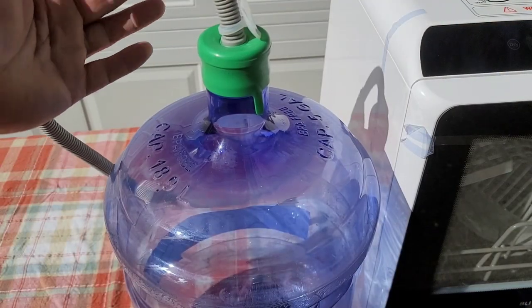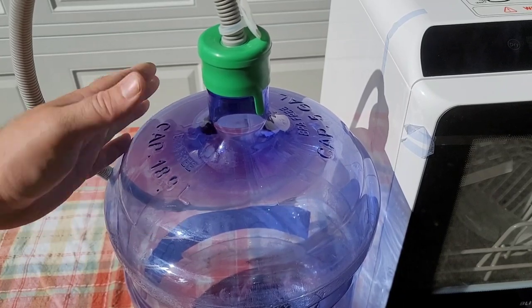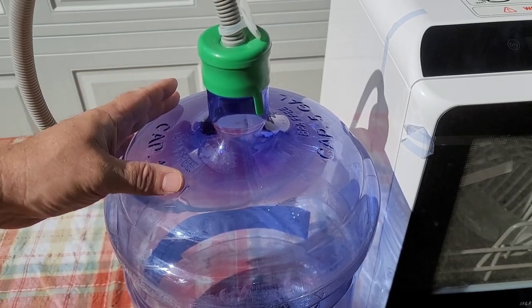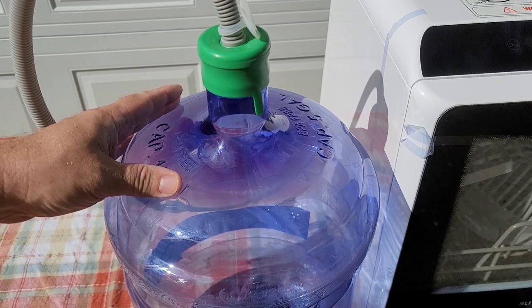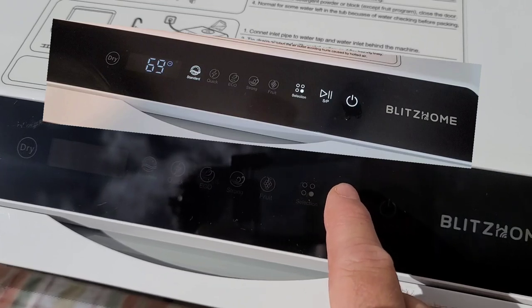I hooked up the drain tube to this five-gallon bucket. I'm going to put this on the floor just in case it's part gravity drain. But I want to see how much water is used when we are washing the dishes. I'm going to pick standard which runs for 69 minutes. Let's hit go.